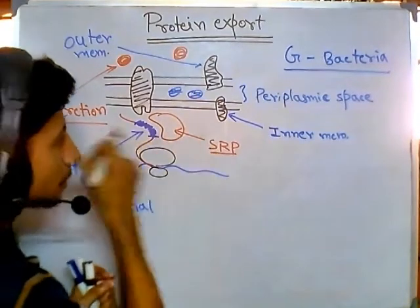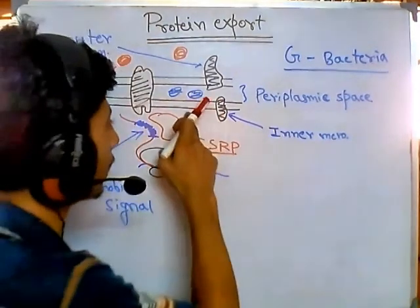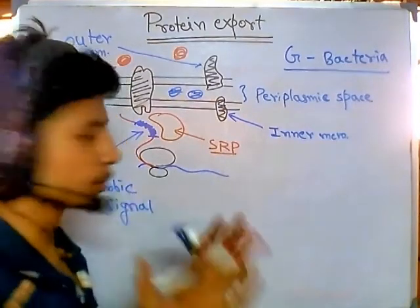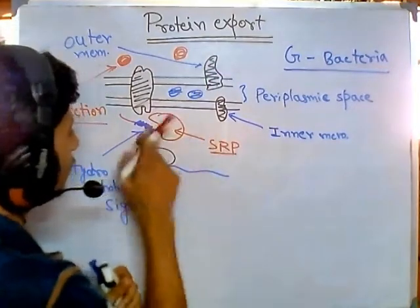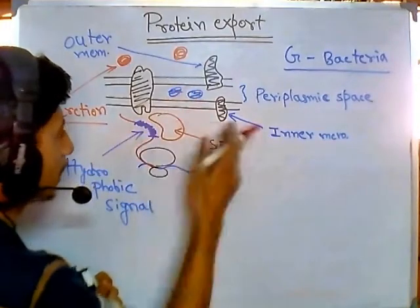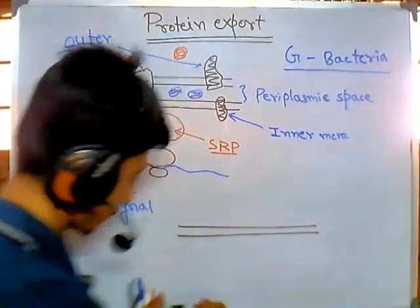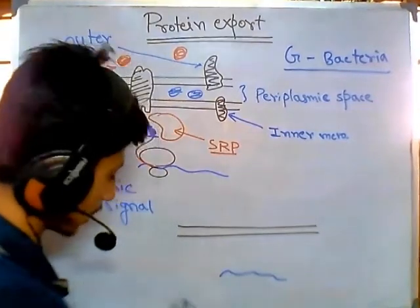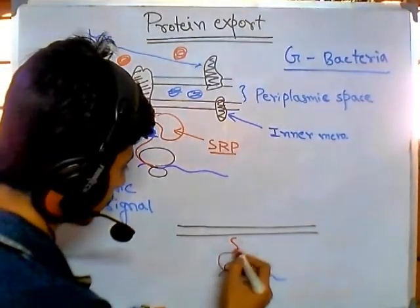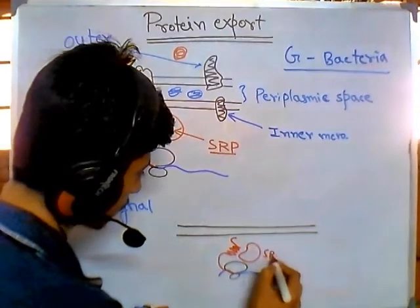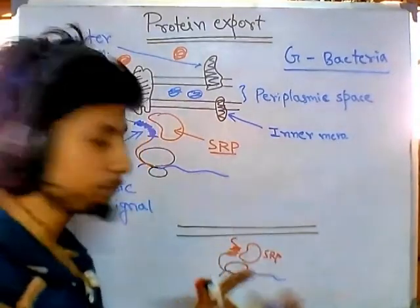The SRP recognizes and attaches to the hydrophobic signal on the newly produced polypeptide. It then guides this polypeptide to be embedded into the membrane, because the goal is to embed the protein into the inner membrane. Let me draw this clearly: here is the inner membrane, the mRNA, the ribosome sitting on it making the protein, and once that hydrophobic stretch is made, SRP binds with it.